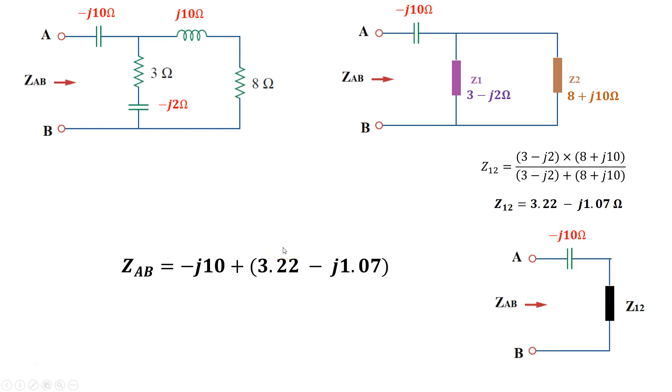The overall impedance zAB, seen from the terminal, is -j10 plus the z12 that we just calculated. So, 3.22 - j1.07.